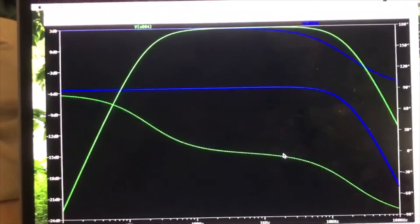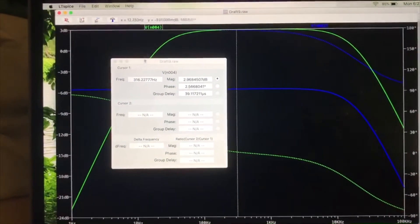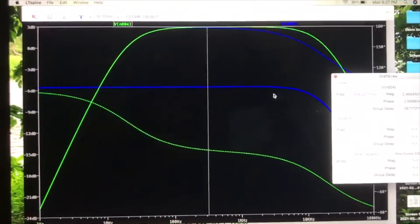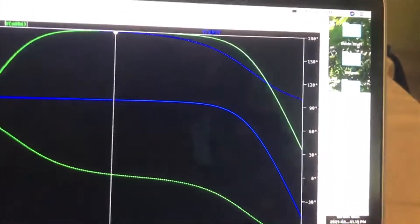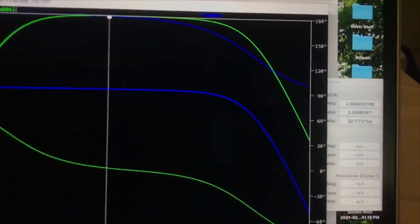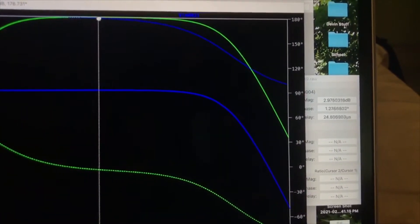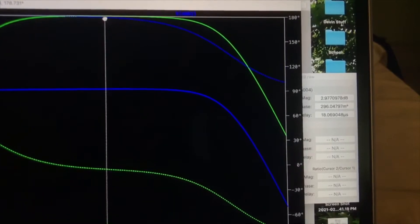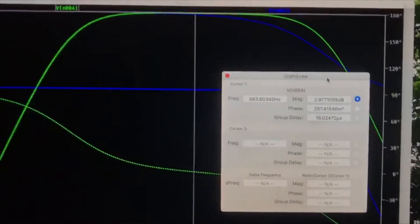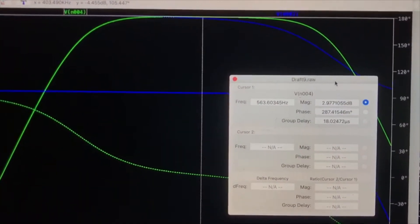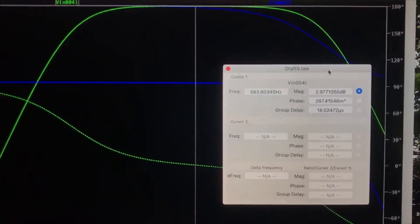If we wanted to measure the maximum gain of the bandpass filter, I'm going to place a cursor so we can measure that. I'm going to take it to its highest point. About 2.977 is about the highest gain in decibels, and that's at a frequency of about 563.6 hertz.